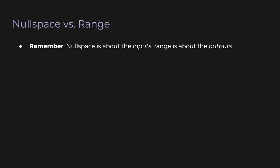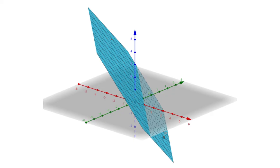As an analogy: rank is to range as nullity is to null space. We've covered two related concepts — null space and range. These are complementary concepts, but not quite completely opposite. One thing to remember is that null space is about the input vectors for a matrix, while range is about the output vectors.